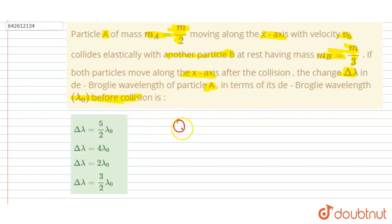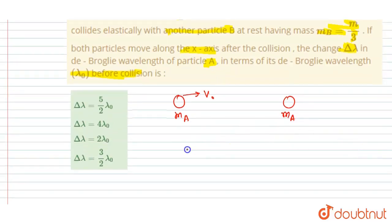de Broglie wavelength of particle A in terms of the de Broglie wavelength before the collision λ₀. So if you see, initially mₐ was moving with velocity v₀ and this was mᵦ which was at rest before the collision, and after the collision they got velocity vₐ and vᵦ.